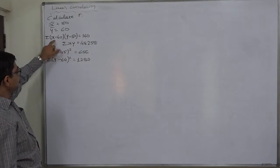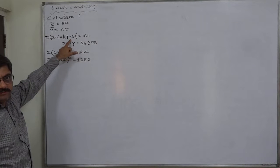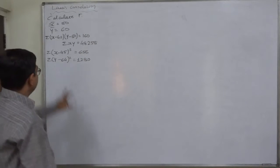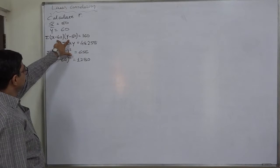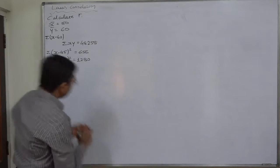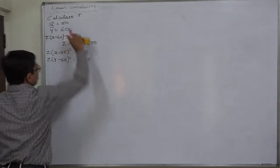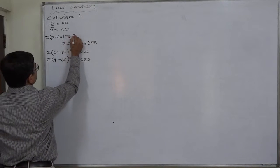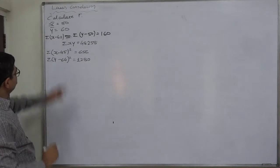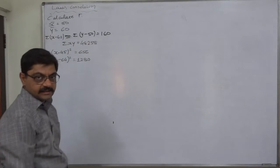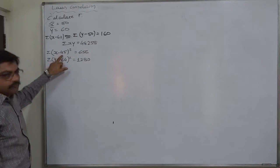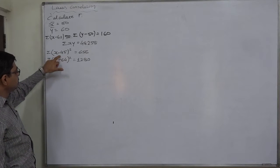It is very clear that this is not sigma(x minus x-bar) and this is not sigma(y minus y-bar). Actually it was a mistake — sigma(x minus 40) = sigma(y minus 50) = 160. That should be the value. Sigma XY = 48,258. Sigma(x minus 45) squared = 656. Note here: it is sigma(x minus 40) in one place and sigma(x minus 45) in another.